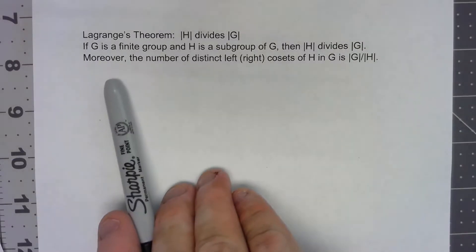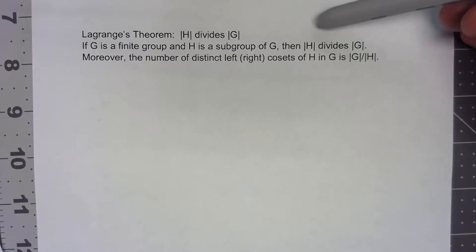If we have a finite group and a subgroup of it, then the number of elements in that subgroup, the order of that subgroup, divides the order of the group.